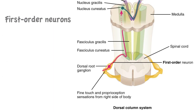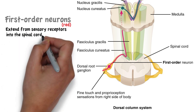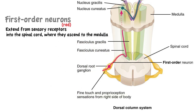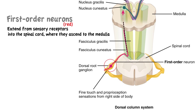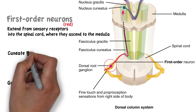First order neurons extend from sensory receptors in the limbs, trunk, neck and posterior head into the spinal cord and ascend into the medulla oblongata on the same side of the body. The cell bodies of these first order neurons reside in the dorsal root ganglia. The myelinated axons of these neurons ascend rostrally into the medulla, forming the dorsal columns, which consist of two tracts: the gracile fasciculus and the cuneate fasciculus.